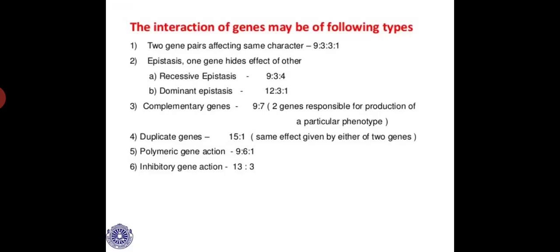The first type is two gene pairs affecting the same character — for example, comb pattern in fowls giving a 9:3:3:1 ratio. There is also interaction called epistasis, where one gene hides the effect of another — of two types: recessive epistasis and dominant epistasis, with their respective ratios. Then there is complementary genes interaction producing a ratio of 9:7, another deviation from Mendelism. There is also duplicate genes producing a ratio of 15:1, polymeric gene interaction producing a ratio of 9:6:1, and inhibitory gene action producing a ratio of 13:3. These are the various types of gene interactions seen in living organisms.